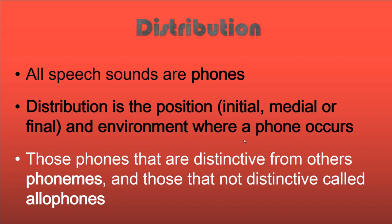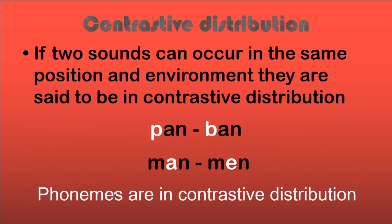The environment — meaning what sounds are neighboring — also decides allophonic variants. Those phones that are distinctive from others are called phonemes, and those that are not distinctive in terms of meaning are called allophones. Allophones are distinctive in their phonetic realization, but meaning change is not involved.